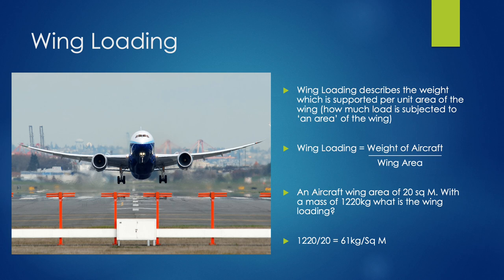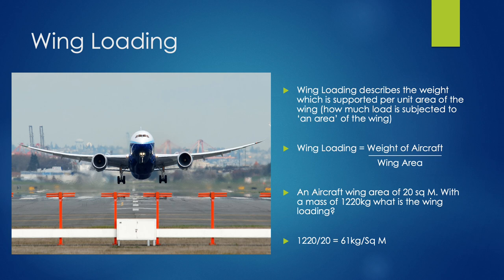Now we're going to look at wing loading. Wing loading is described as the weight supported per unit area of the wing — basically how much load is subjected to a portion of the wing, or how much stress the wing is under. The more lift required, the more wing loading is subjected to that wing. The equation is: wing loading equals the weight of the aircraft divided by the wing area. For example, an aircraft with a wing area of 20 square metres and a mass of 1,220 kilograms gives a wing loading of 61 kilograms per square metre. The higher the wing loading, the more stress the aircraft will be under.